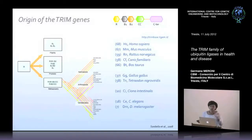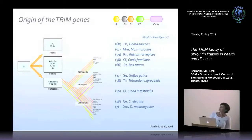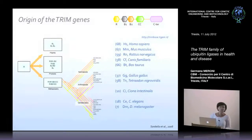Given the elevated number of Trim genes in human, we sought to trace back the origin of these genes in evolution. We started to look for the presence of the B-box, which is the characteristic domain of this family. B-box domains are not present in prokaryotes or in plants in the same arrangement. The association of the B-box domain together with the ring and the coiled-coil is sort of an invention of the metazoans.